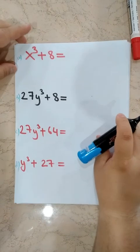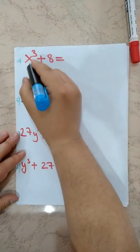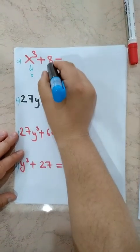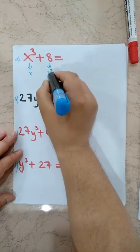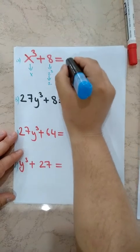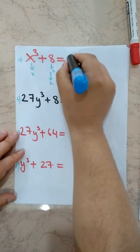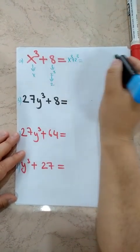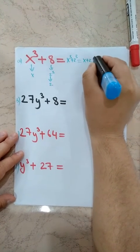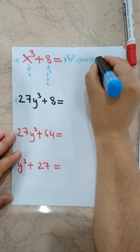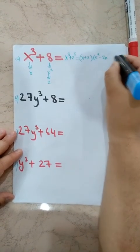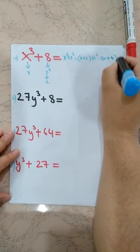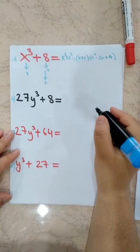Now some more examples. For X cubed plus 8: our first term is X, and 8 — which number cubed is 8? — 2 cubed. So second term is 2. We write X cubed plus 2 cubed, then expand: X plus 2 times X squared minus 2X plus 4. This is the expanded form of X cubed plus 8.